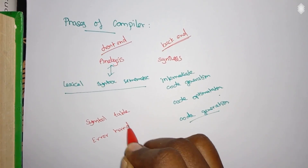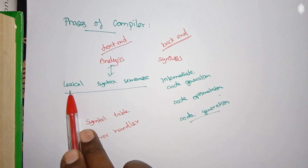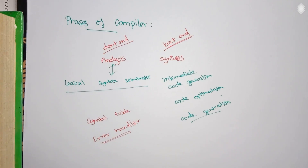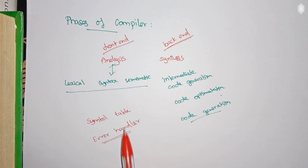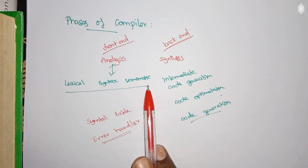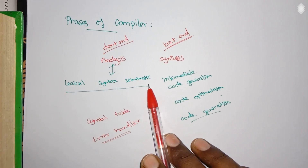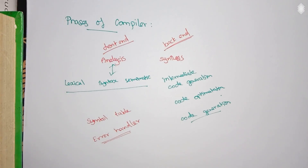The second data structure is the error handler. Each phase checks for errors, and if any error occurs, the error handler is responsible for handling it and reporting it to the user. If there is any error in the syntactic or semantic structure of the code, it needs to be reported, and that is handled by this error handling mechanism.